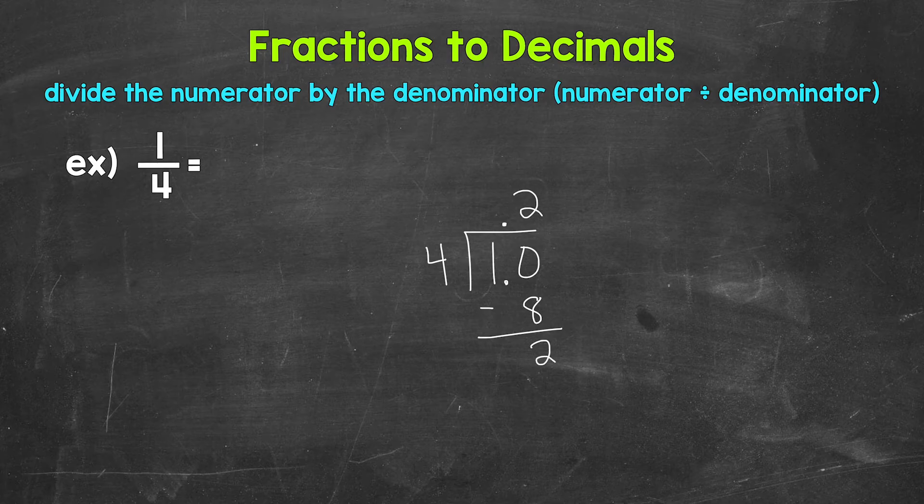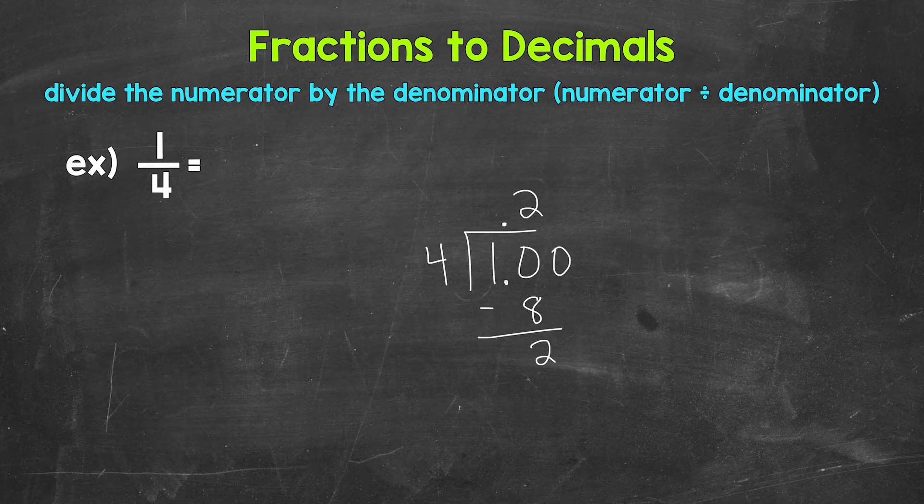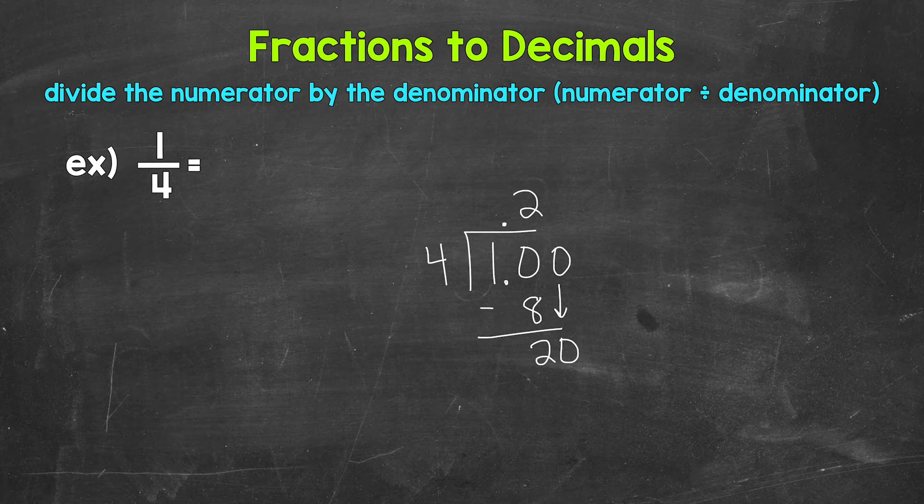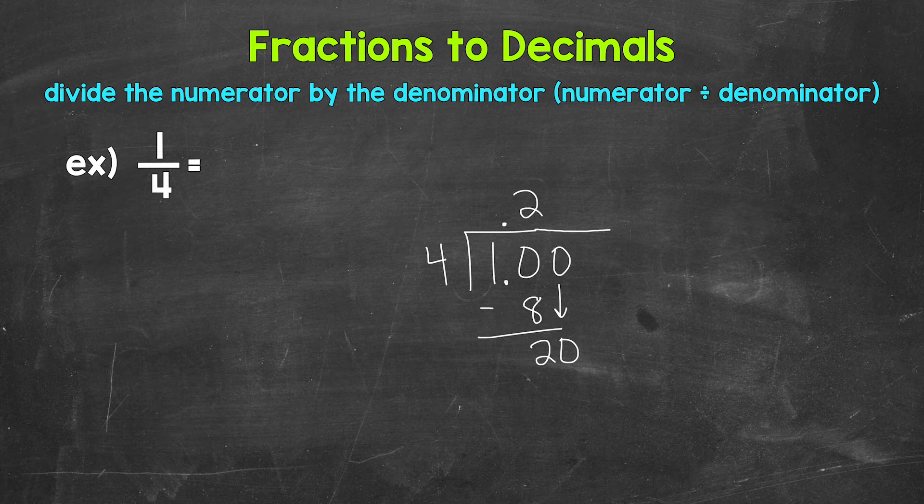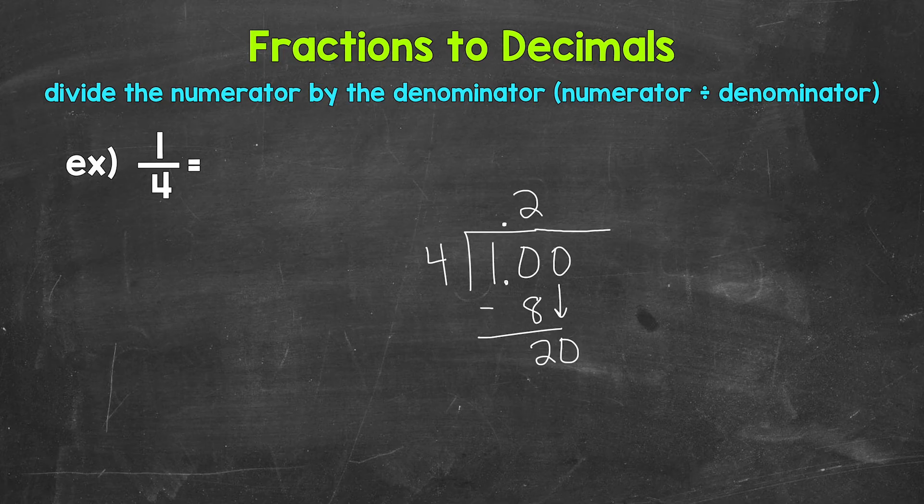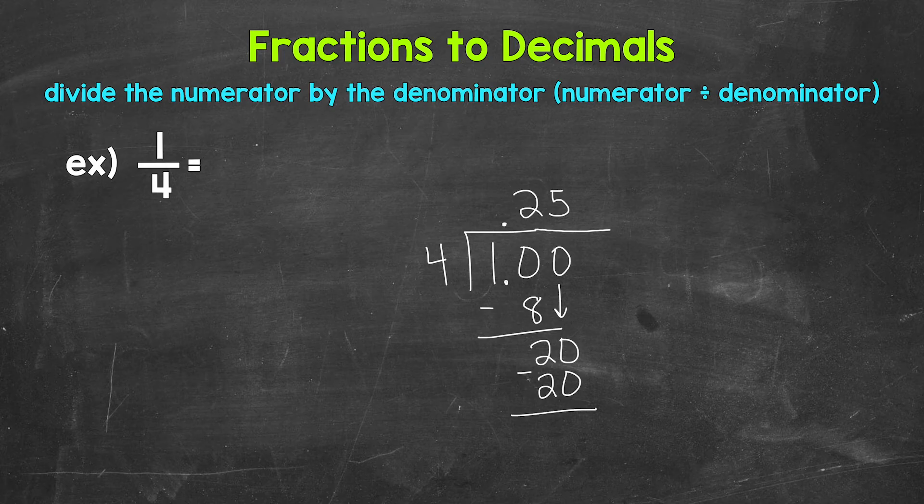We don't have a clean cut 0 there at the bottom quite yet. So we can use another 0 that we can bring down. And now we have 20. I'm going to extend the division bar here. And now we have 20 divided by 4, which gives us 5. So we put 5 up here. Multiply. 5 times 4 is 20. Subtract. 20 minus 20 is 0. So now we have that clean cut 0 at the bottom.